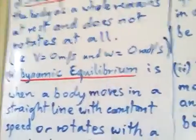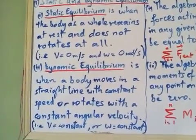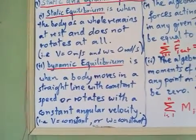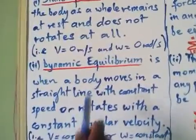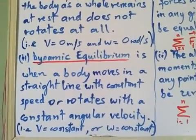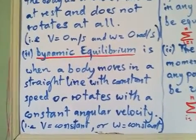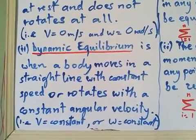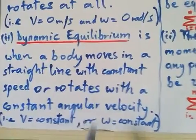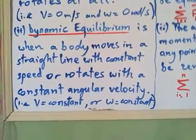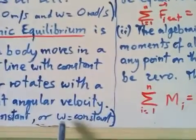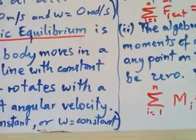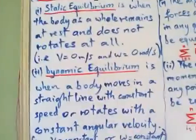Dynamic equilibrium is when the body moves in a straight line with a constant speed, or rotates with a constant angular velocity. The body is moving but with a constant speed, and the linear velocity is a non-zero constant, and the angular velocity is also a non-zero constant.